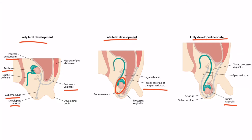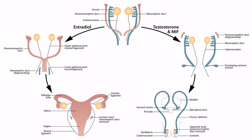Now that you understand gonadal descent, let's continue discussing the development of male internal genitalia. In the final male image, notice that the paramesonephric duct degenerates and leaves behind a remnant structure known as the appendix testis, present on the superior aspect of the testes. The mesonephric duct becomes most of the internal male genitalia, including the epididymis, ductus deferens, seminal vesicles, and the ejaculatory duct. The bladder, prostate, and scrotum are also outlined in this final image for context, but these are not part of the mesonephric duct.